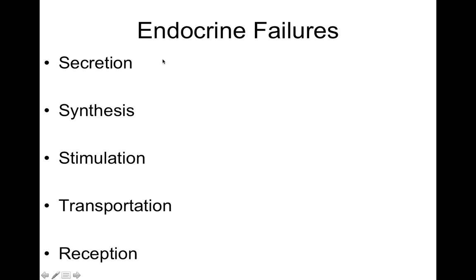Endocrine failures can happen for several reasons. The hormone may not be secreted, not made correctly, or not made at all. The gland may not be responding to stimulation to make it. There can be an issue with transportation in the blood or into the cells. Or the receptors in the cells simply aren't there.